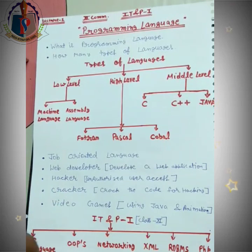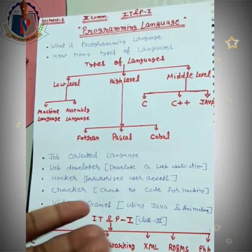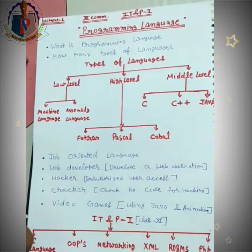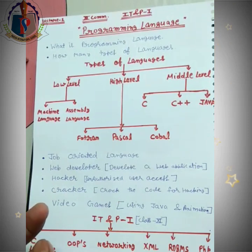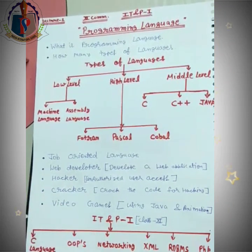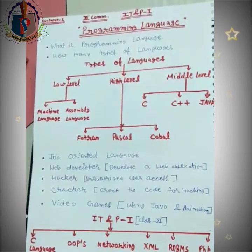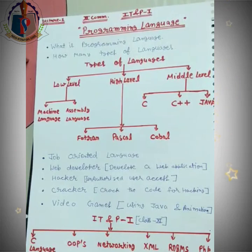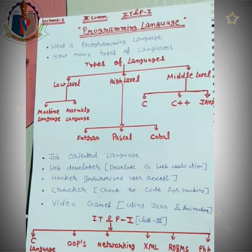Networking se related cheezein padhenge jisme real life ki cheezein aayengi — network, GSM, CDMA, email, chat. XML programming language ka starting part hai, designing ke liye use kiya jaata hai. RDBMS — har website mein ek database use kiya jaata hai, record maintain karne ke liye, jo DBMS ka hi ek part hai. Aur last mein PHP — Personal Homepage Hypertext Preprocessor. Thank you.